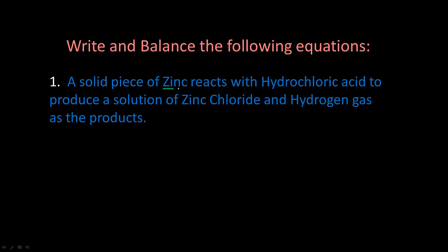Example: a solid piece of zinc reacts with hydrochloric acid — so we have zinc plus hydrochloric acid — to produce a solution of zinc chloride and hydrogen gas as the products.